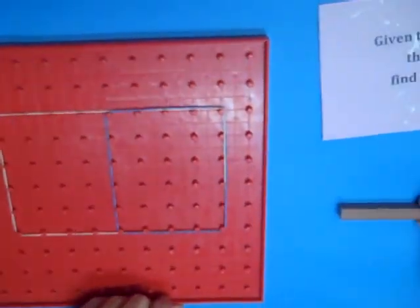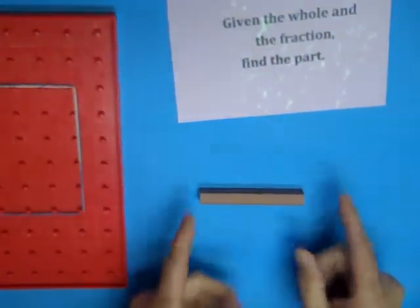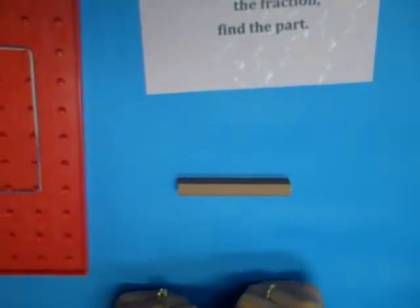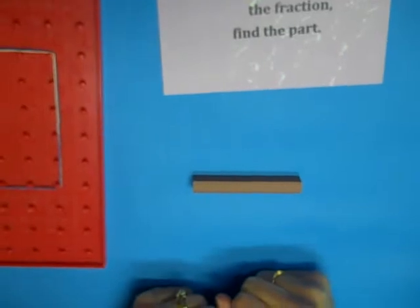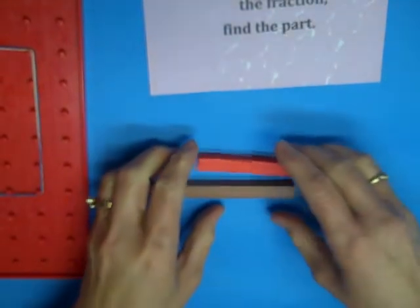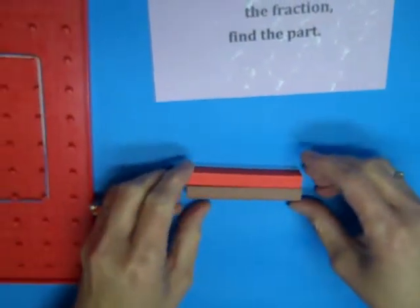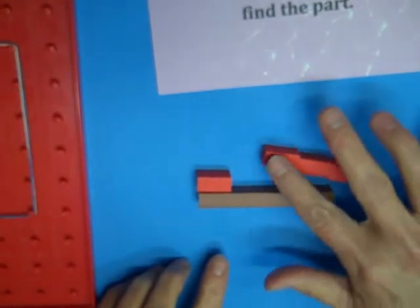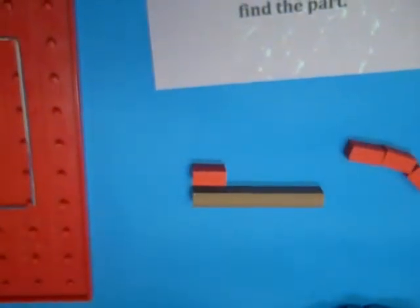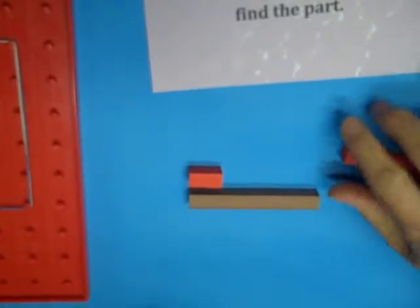Now, if I was doing the linear model, if this is my whole, show me what a quarter or a fourth looks like. So then I would have to take my other blocks and find something that four equals. If brown is one, or the whole, the red is one-fourth.